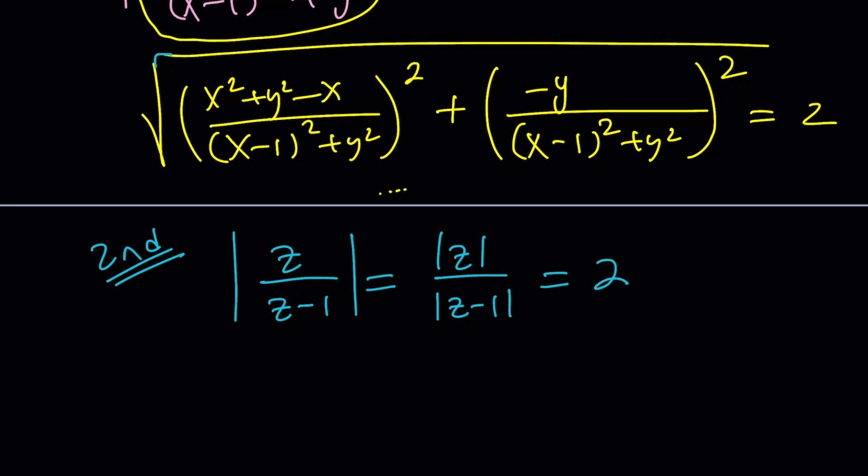And then, of course, we can do cross multiplication. Obviously, z cannot equal 1, and it could never equal 1. So, we're good. Let's multiply both sides.